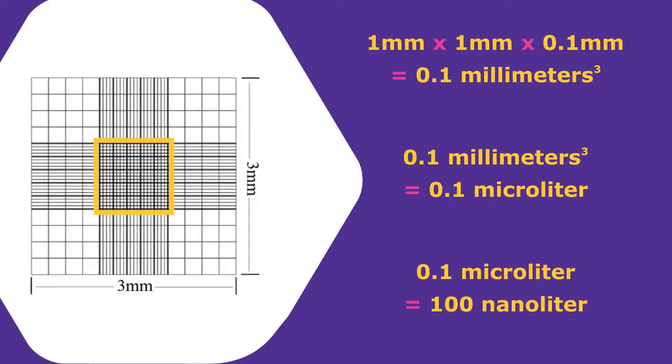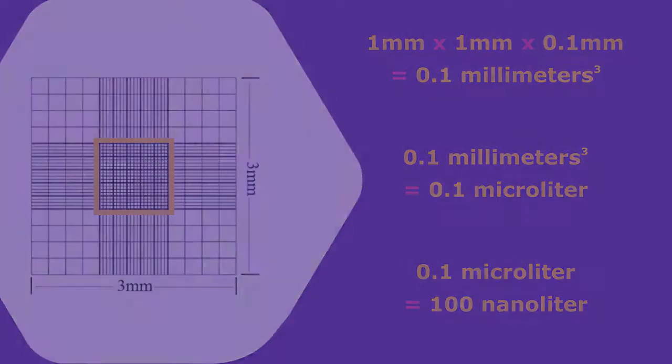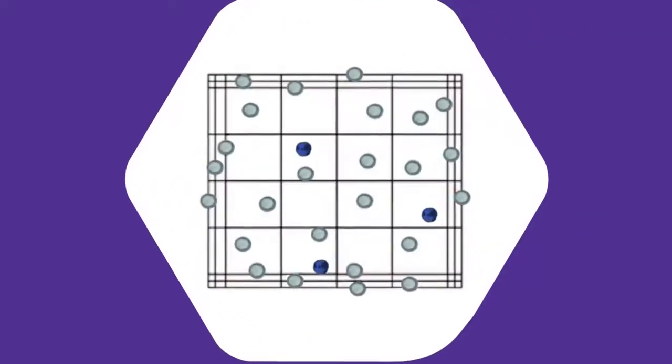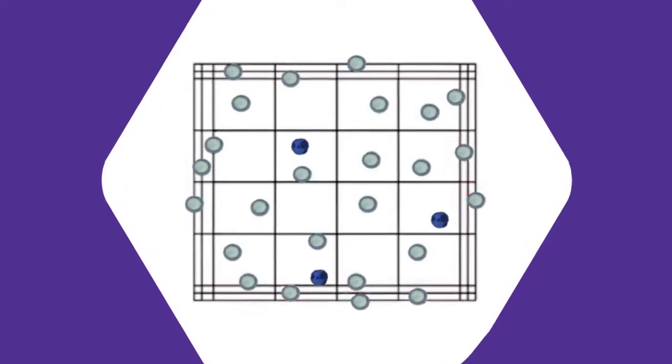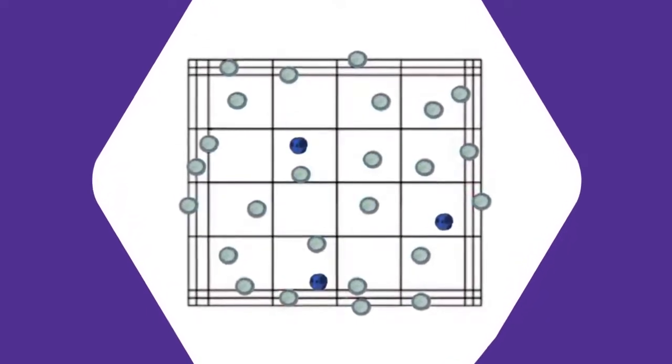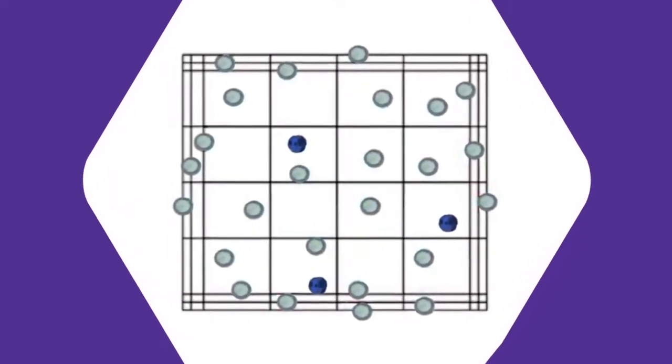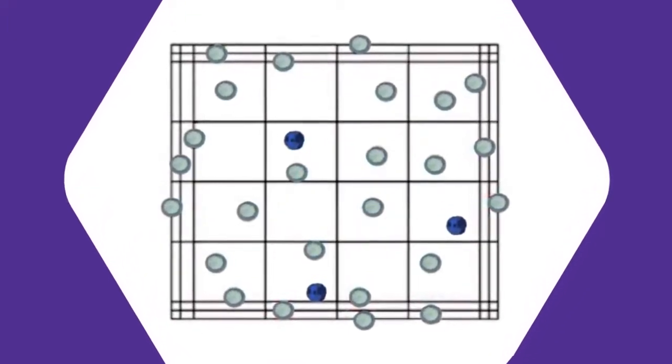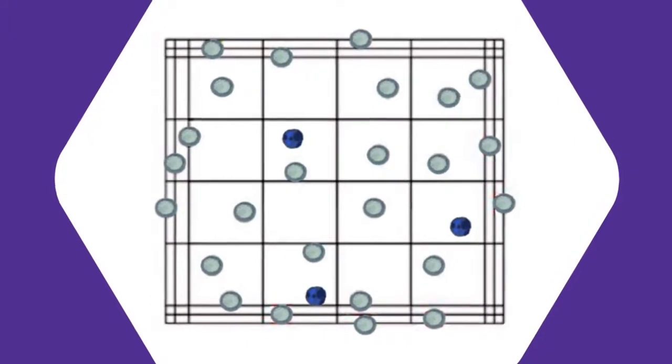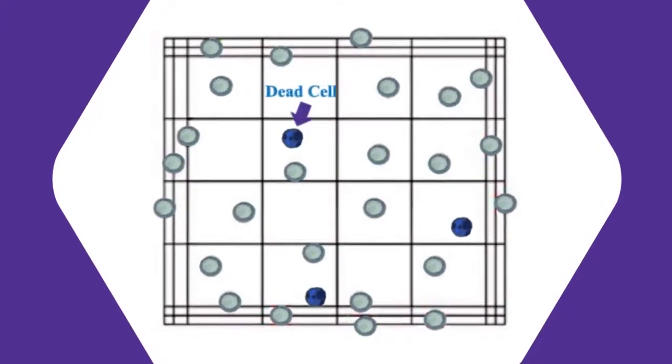Since we know the exact volume we're working with, it is just a matter of counting cells to obtain cell concentration. Let's take a closer look. In this example, we'll use the same center chamber for cell counting after loading cells that are mixed one-to-one with Trypan Blue. Since Trypan Blue will stain dead cells with dark blue color, we have a very convenient way of distinguishing dead versus live cells.